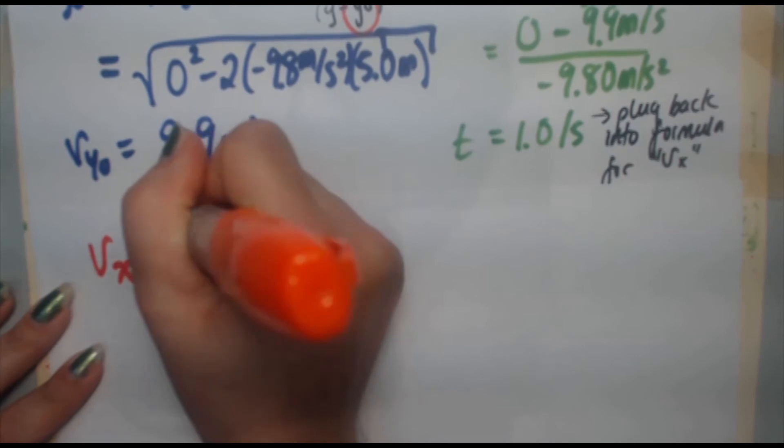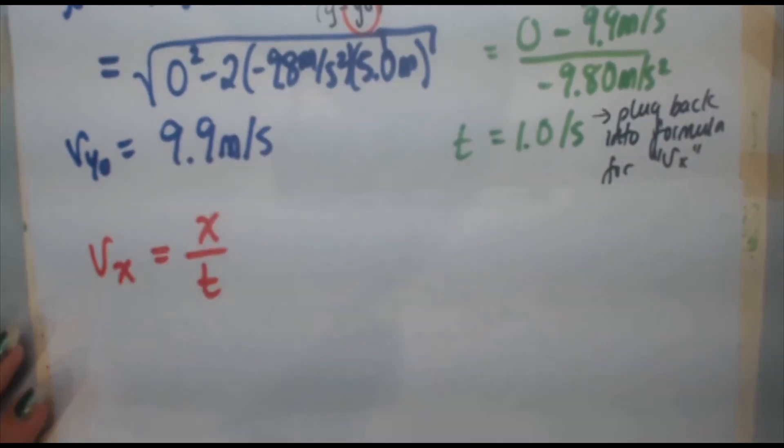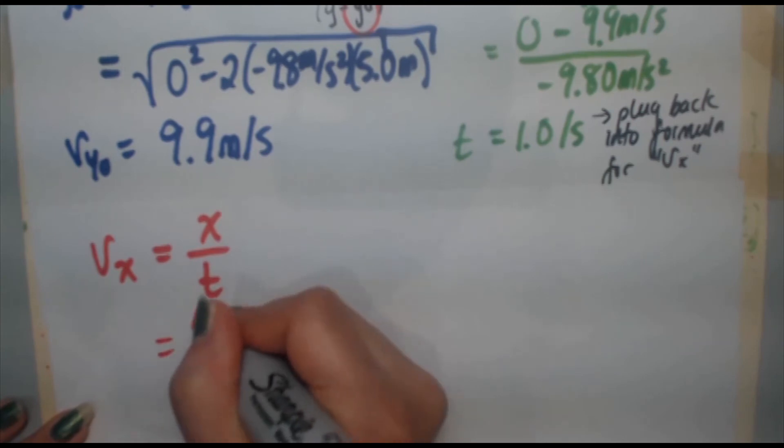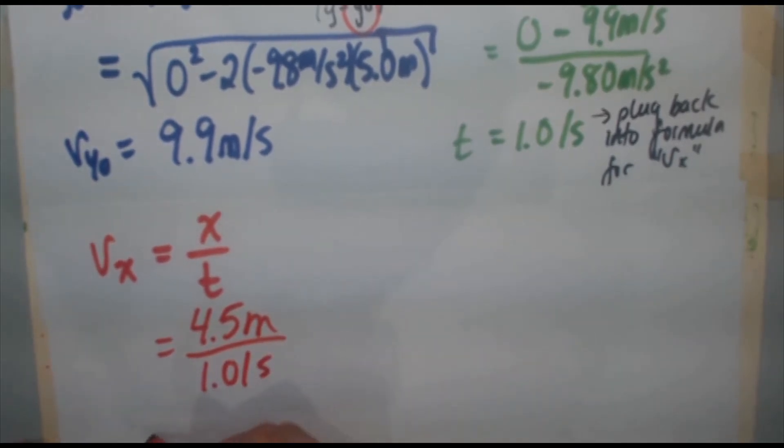Going back to what we had originally, remember our simple expression, speed is distance over time. It's just specialized for the x direction. Our x is 4.5 meters. That was given in the problem and we just found our time to be 1.01 seconds. So do that simple division and you're going to get vx equals 4.45 meters per second.